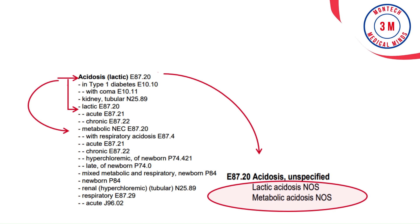This means all the terms — Acidosis NOS, Lactic Acidosis NOS, and Metabolic Acidosis NOS — are assigned to the same code E87.20. Also, looking at the main term 'acidosis' in the alphabetic index, the default code is E87.20. Following the subterms under acidosis, lactic and metabolic are also assigned to the same code E87.20.